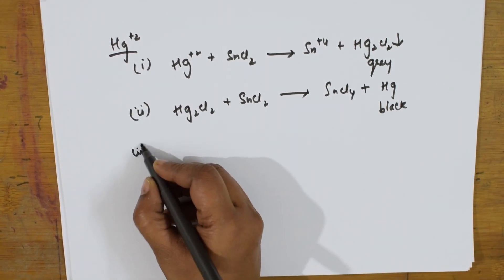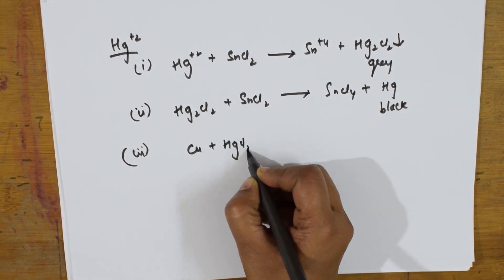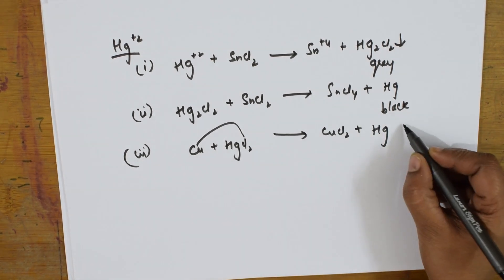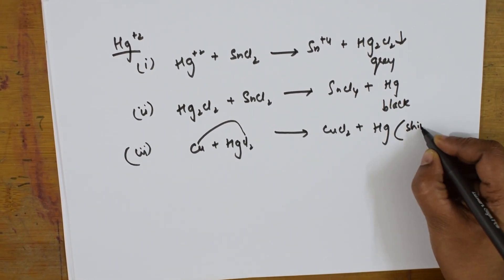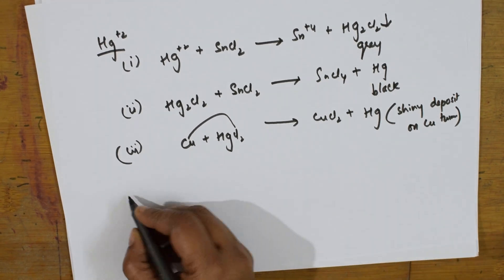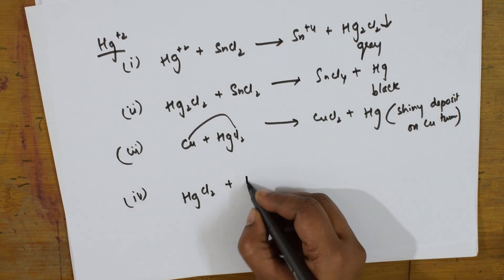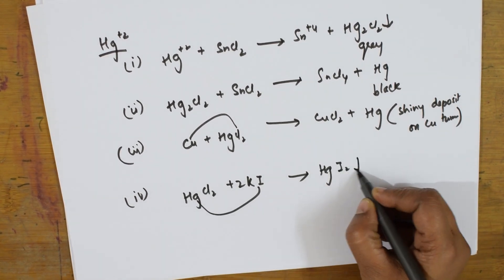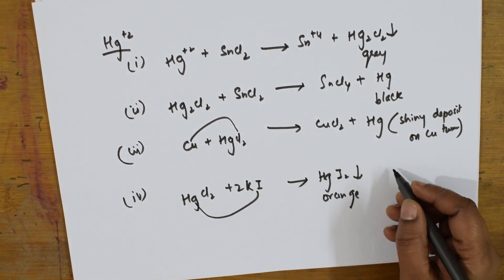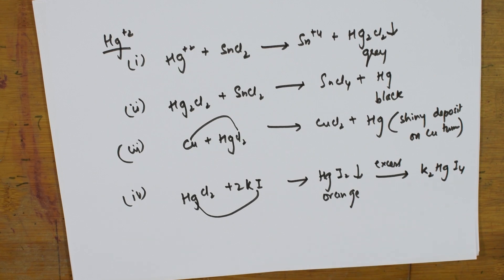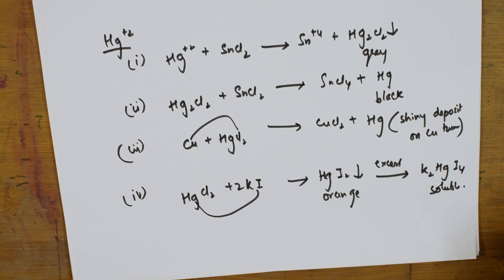You can also perform further the reactions, that is you can add copper turnings to HgCl₂. What will you get? You will get copper chloride plus silver. It's a shiny deposit on copper turnings. You can also take HgCl₂ and add potassium iodide to this, 2 moles. Then it's going to form HgI₂, an orange color PPT. When you add excess of that, you get K₂HgI₄, potassium tetraiodomercurate. This is soluble in nature. These are the tests for mercury.